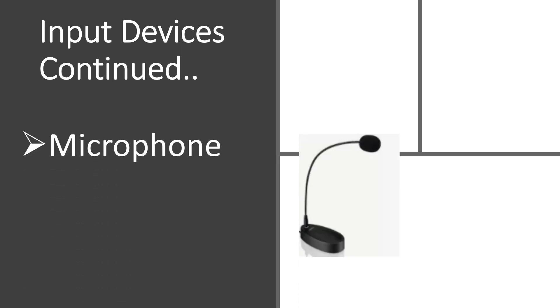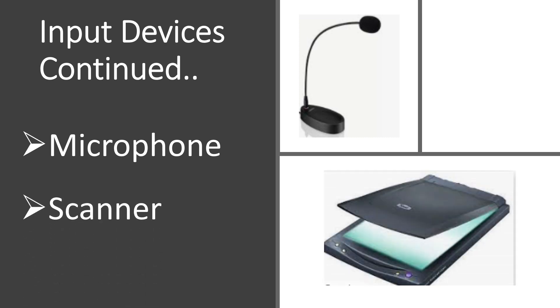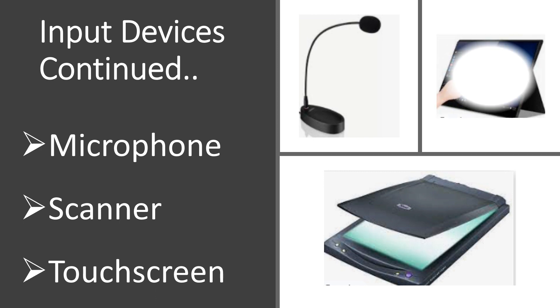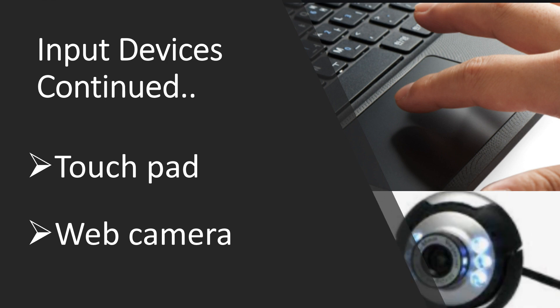Few more input devices are: Microphone, which helps to give sound input to the computer system. Scanner is used to store images, pictures, etc. in a computer system. Touch screen can sense the touch of your finger. Touch pad can sense the special surface with the movement of a finger and acts more like a mouse. Web camera is used to capture and store images and live videos, and can also be used for chats and live docs.